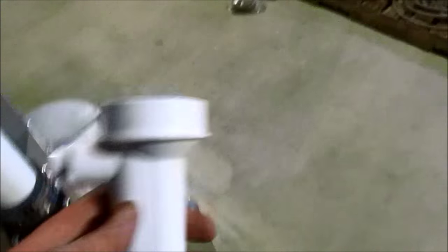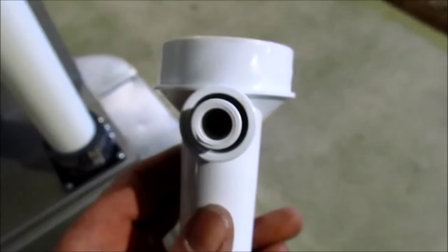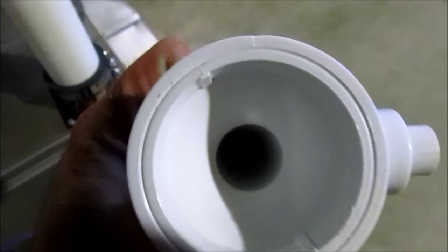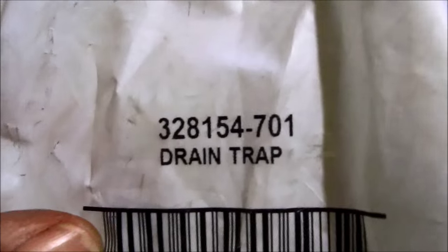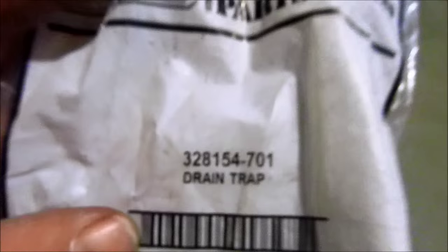Let me put this down for a second here. So there's the intake trap and that's how it comes. This part number is a Total Line part number: 328154-701 exterior trap kit.